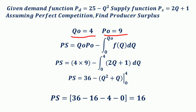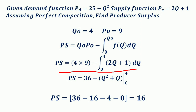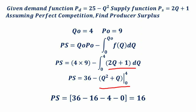After getting the equilibrium price P0 = 9 and quantity Q0 = 4, we substitute into the producer surplus formula: PS = Q0 × P0 − ∫₀^Q0 F(Q) dQ = 4 × 9 − ∫₀⁴ (2Q + 1) dQ. The integral of 2Q + 1 is Q² + Q, evaluated from 0 to 4. So PS = 36 − [(4² + 4) − 0] = 36 − [16 + 4] = 36 − 20 = 16.